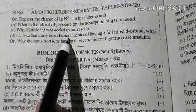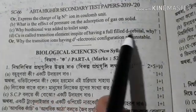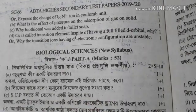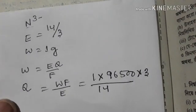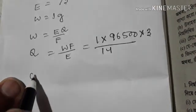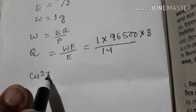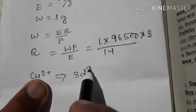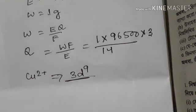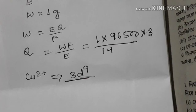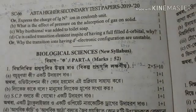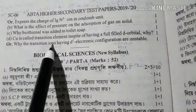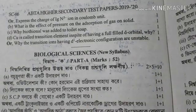Copper is called a transition element in spite of having a filled d-orbital. Copper is called a transition element because in its stable 2+ oxidation state, the electron configuration is 3d9, not 3d10. Transition ions have an incomplete d-configuration, making them unstable.